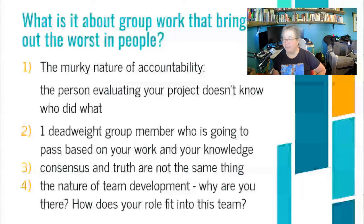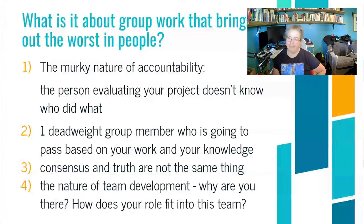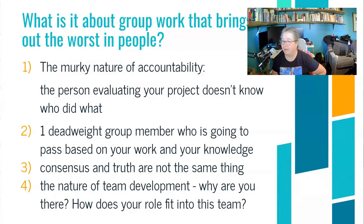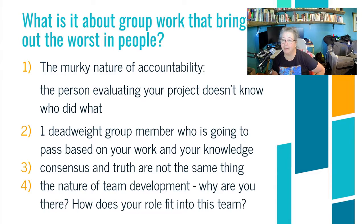From my favorite resource about the use of Trello, the author asks: what is it about group work that brings out the worst in people? Is it one, the murky nature of accountability — the person evaluating the success of your project never knows who did what? Number two, that there's always one deadweight group member who's going to pass based on your work. Three, the idea that building consensus and finding truth are not always the same thing, and those limits can get very murky when you're having friction around the direction to go.